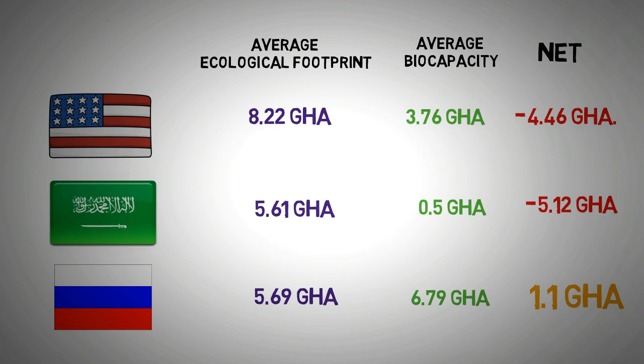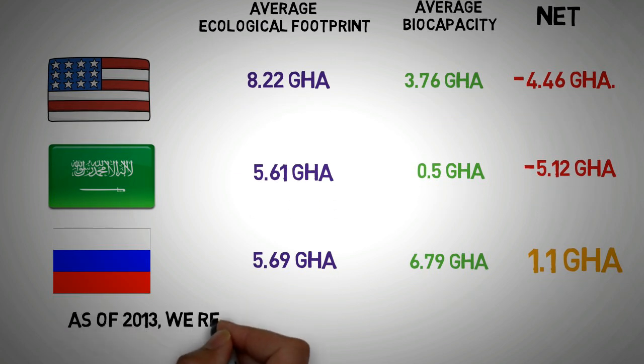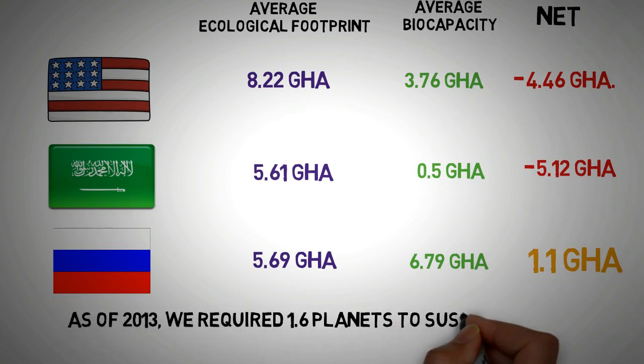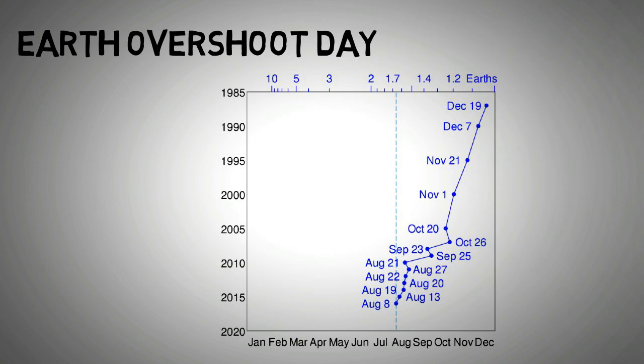It should be noted that the average global bio-capacity is decreasing, while annual ecological footprint is increasing. As of 2013, we require 1.6 planets to sustain ourselves. The study of ecological footprint is very revealing. Students are advised to look at topics like Earth Overshoot Day. The index of ecological footprint helps us in building a framework in which we can think quantitatively about sustainability.